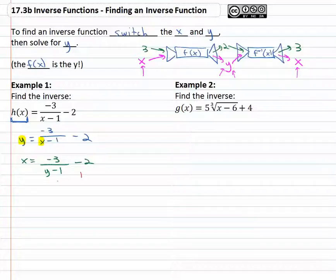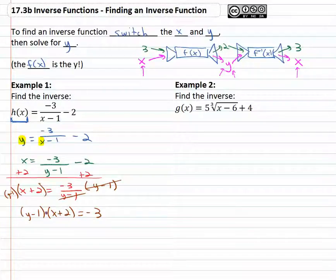So let's first work to isolate the part with y by adding two to both sides. This gives me x plus two equals negative three over y minus one. Let's see if we can clear out that fraction. Let's multiply by the denominator y minus one on both sides. That will divide out the denominator on the right, and we have y minus one times x plus two equals negative three. Trying to get the part with y alone, so let's take the factor that doesn't have y and divide it out. That x plus two is multiplied, so we'll divide both sides by x plus two, giving us y minus one equals negative three over x plus two.